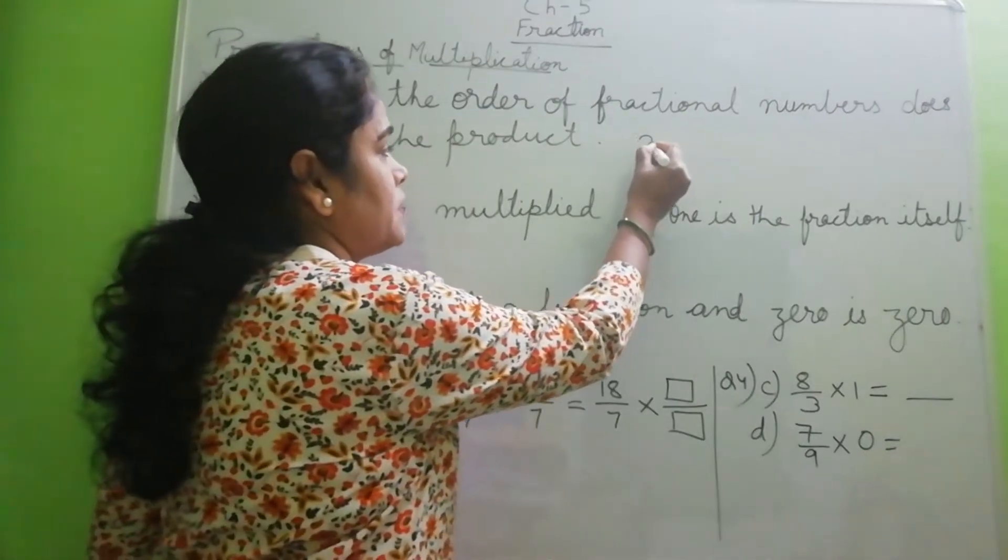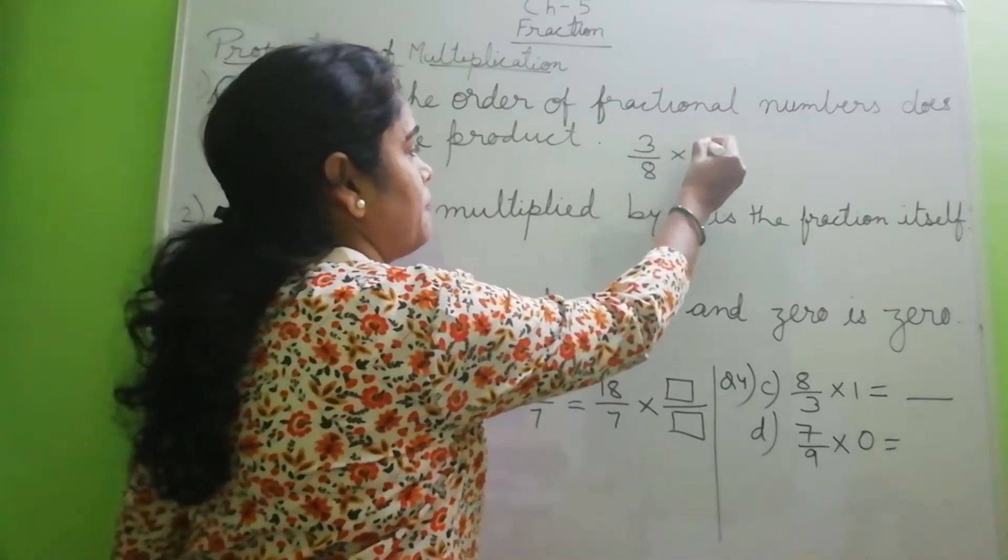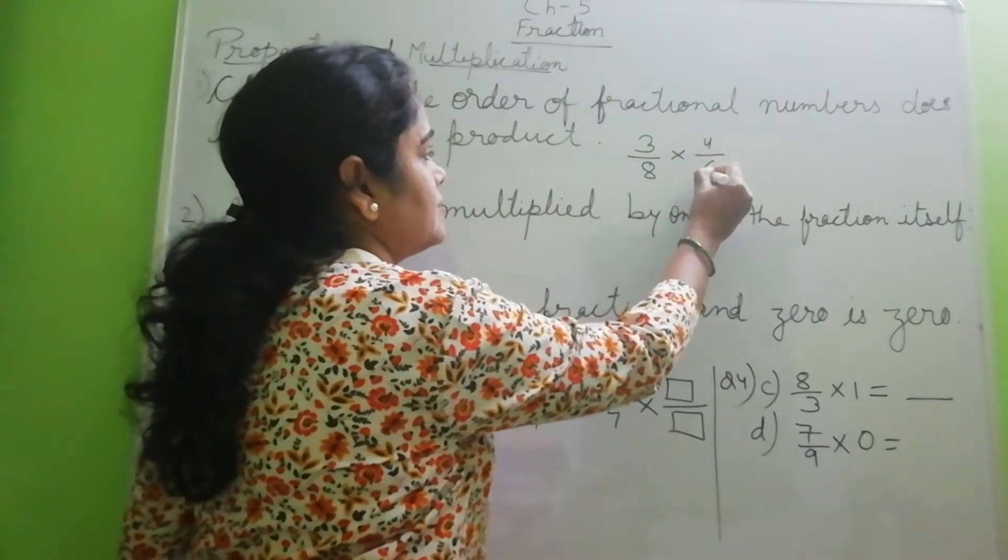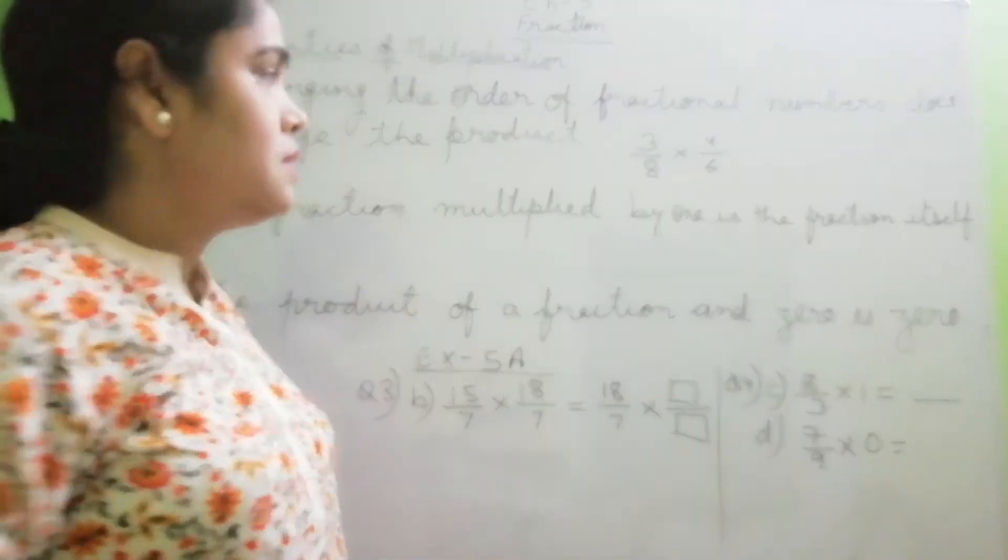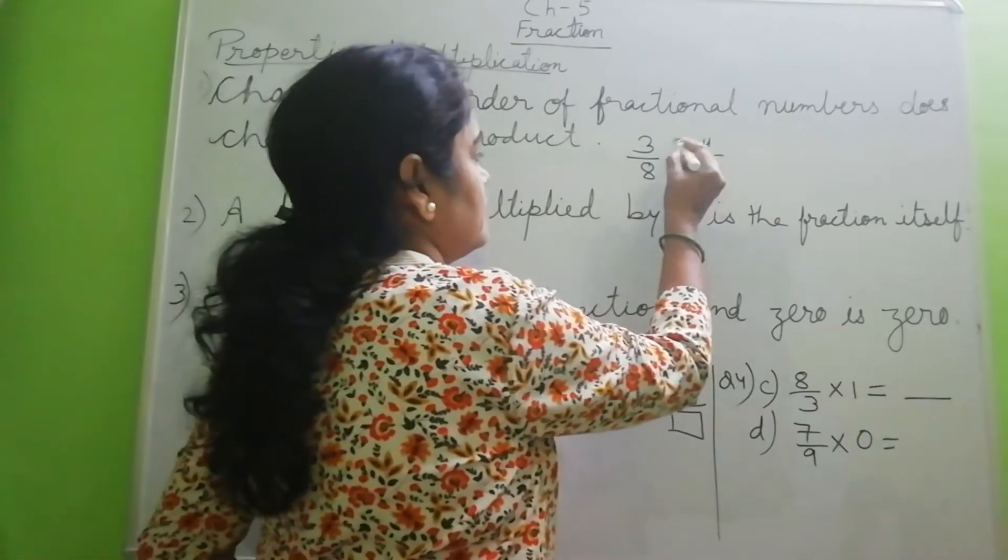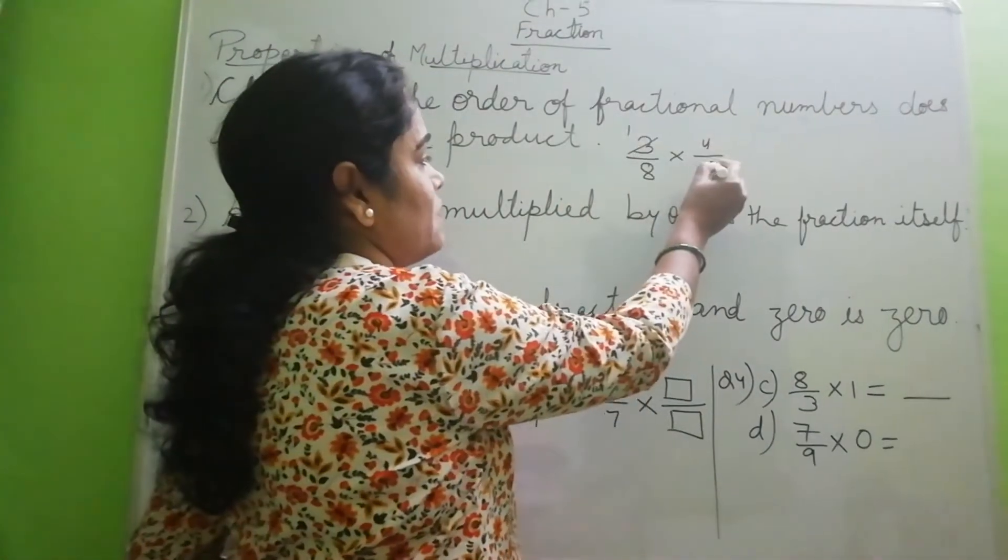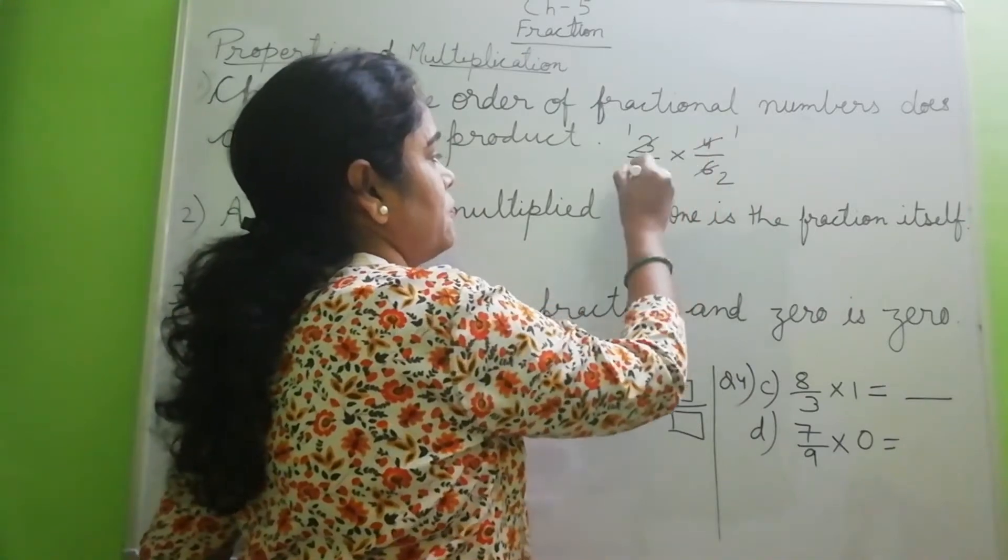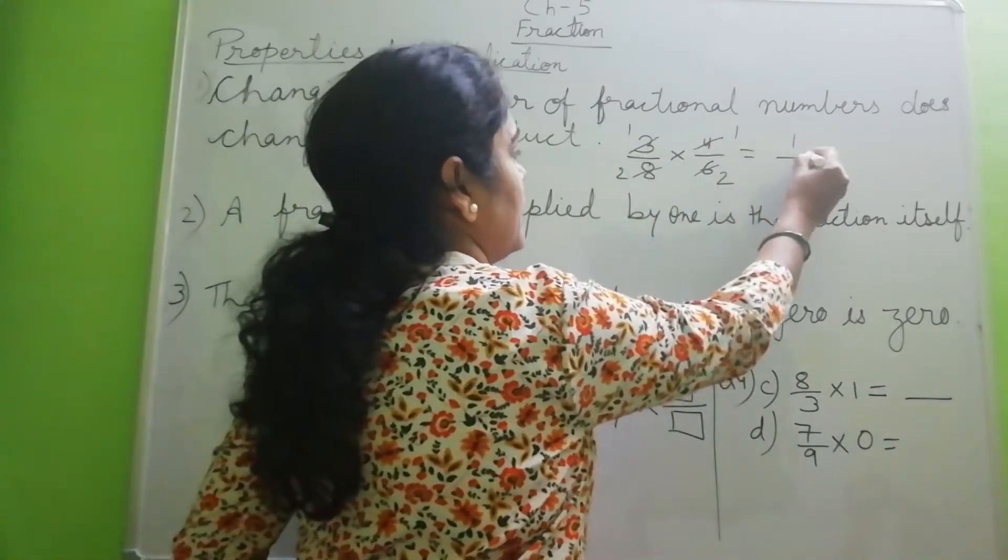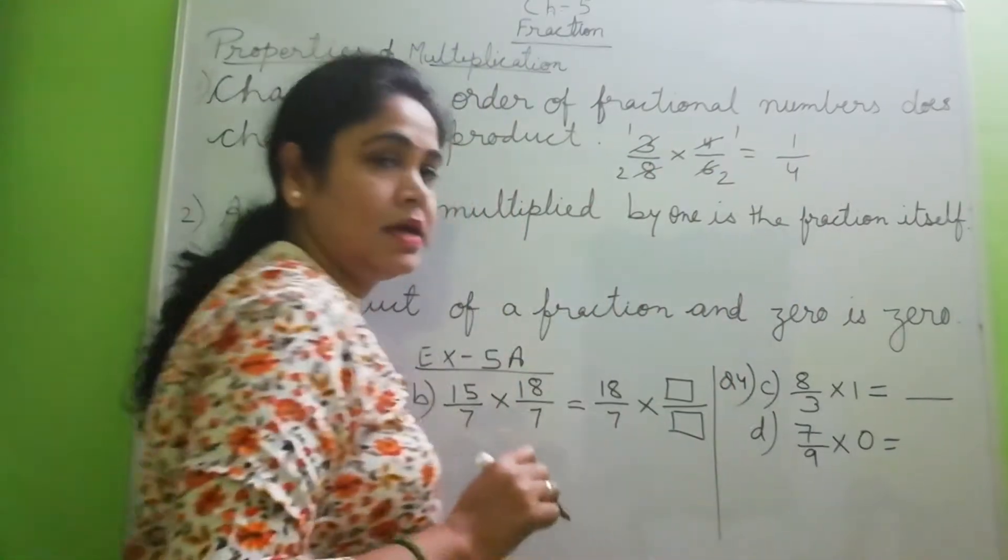now I am showing you 3 by 8 multiplied by 4 by 6. Suppose this is the question. So what is the answer? You can cross. You have learned multiplication of fractions. 3, 1 ja 3; 3, 2 ja 6; 4, 1 ja 4; 4, 2 ja 8. So answer is 1 by 4.